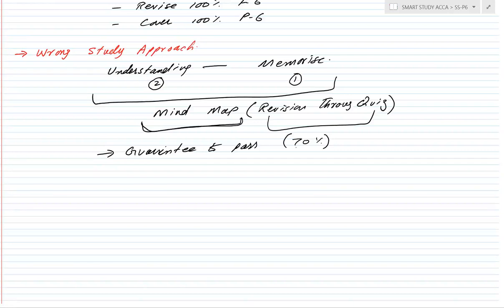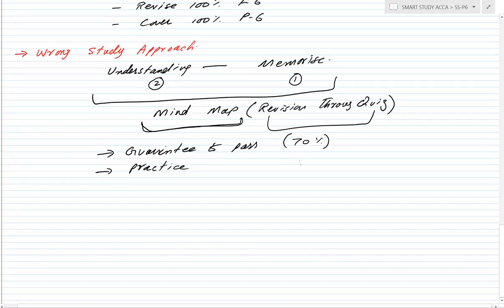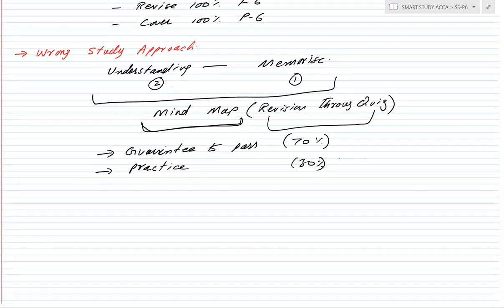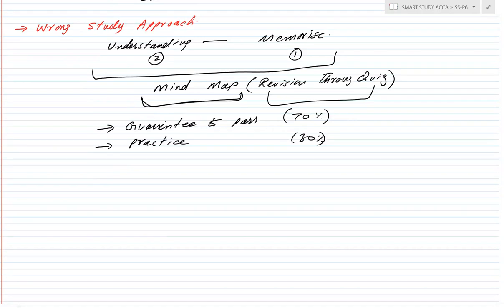Almost 70% of your chances of passing will depend on using the mind map properly, and the remaining 30% will depend on practice. Without practice, you won't be able to tackle the questions. So focus on two things: memorizing the rules using the mind map, and practicing questions. This is the right study approach for this paper.